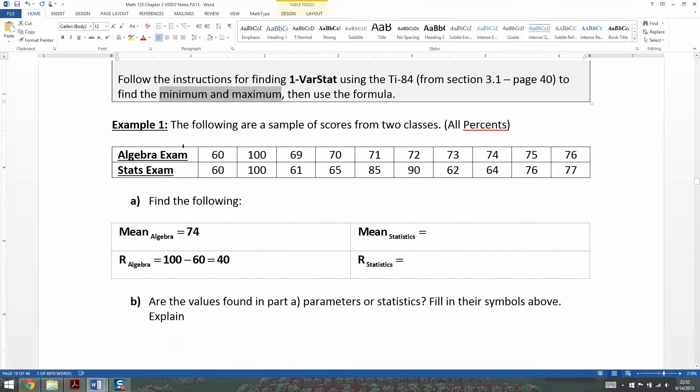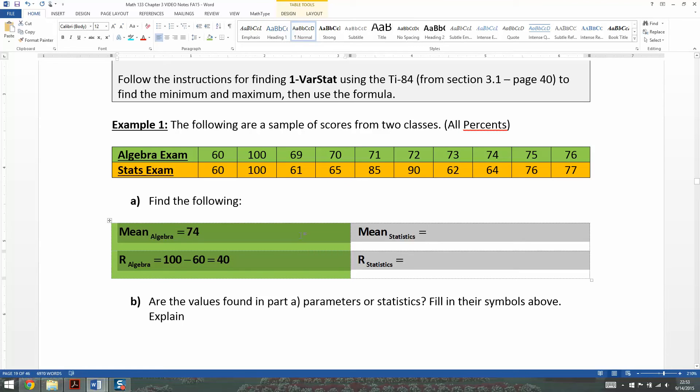So let me grab a calculator. I've already done the algebra exams. The algebra exam values I'm going to highlight in green. So the algebra exam is right here, the green values. I've already found the mean, which was 74, and the range, which was 40. Now I want to do the same for the statistics exam, which is the orange values.